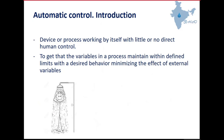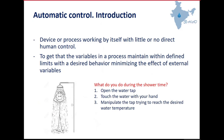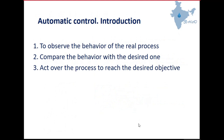Taking a shower is an example found in the first courses of control. When you take a shower, the first thing you do is open the water tap, then you touch the water with your hand, and then you start to manipulate the tap trying to reach the desired water temperature. This is not exactly automatic control because you do it manually, but it gives you an idea. So finally, automatic control is to observe the behavior of the real process, compare it with the desired one, and then act over the process to reach the desired objective.